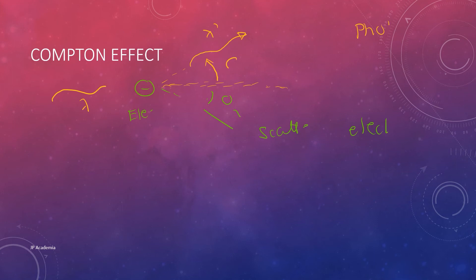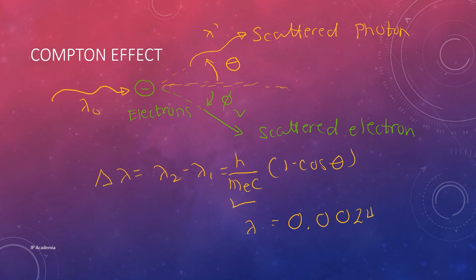Using the geometrical configuration we have defined for Compton scattering, we have this expression. This is the expression for the change in wavelength as a function of the scattered photon angle theta and a constant, which is your Compton wavelength with this value.